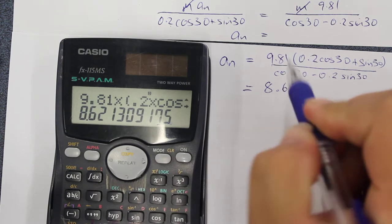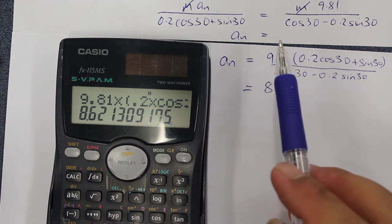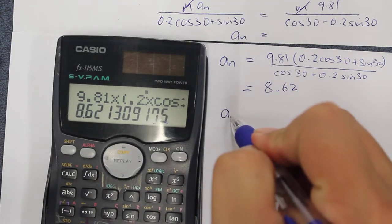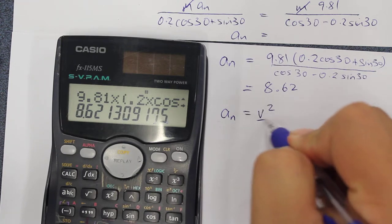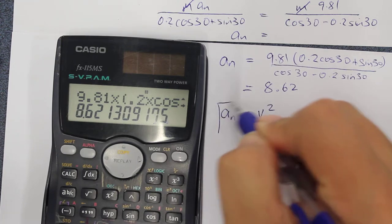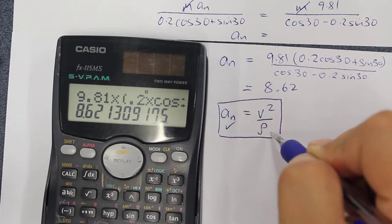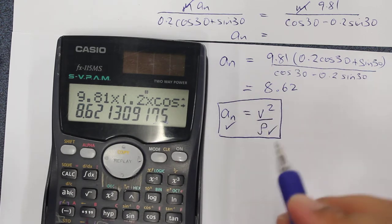This leads on to trying to find out the velocity. Before we had an equation which gave us an acceleration in the normal direction equal to v squared over rho. We now know two of these terms, the acceleration in the normal direction and the radius rho, so we can substitute values into here to find the velocity.